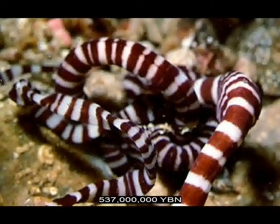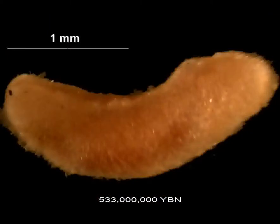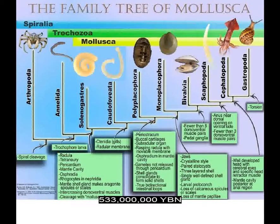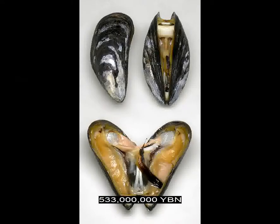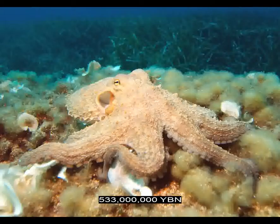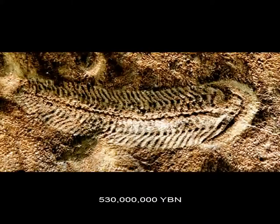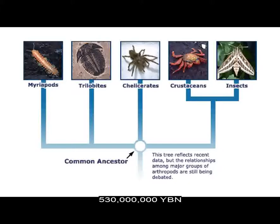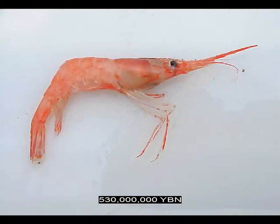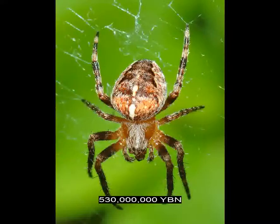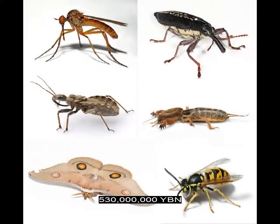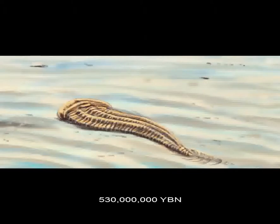The first heart evolves in bilaterians. Trochozoa Nemertia — ribbon worms. Trochozoa molluscs evolve. The phylum Mollusca is the second largest animal phylum after the arthropods and is divided into seven classes, three of which — Gastropoda (snails), Bivalvia (clams and mussels), and Cephalopoda (squids and octopuses) — are of major importance. Ecdysozoa arthropods evolve. Arthropods can be compared to a segmented worm encased in a rigid exoskeleton. The phylum Arthropoda is the largest phylum in the animal kingdom, including trilobites, crustaceans, myriapods, chelicerates, and insects. All arthropods have a segmented body covered by an exoskeleton containing chitin, which serves as both armor and as a surface for muscle attachment.